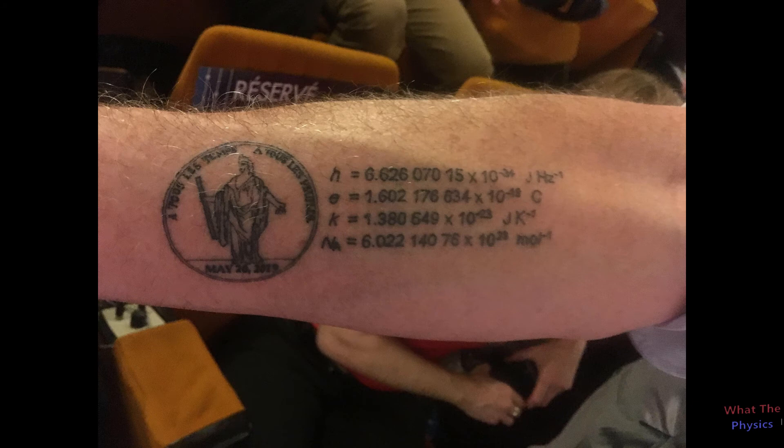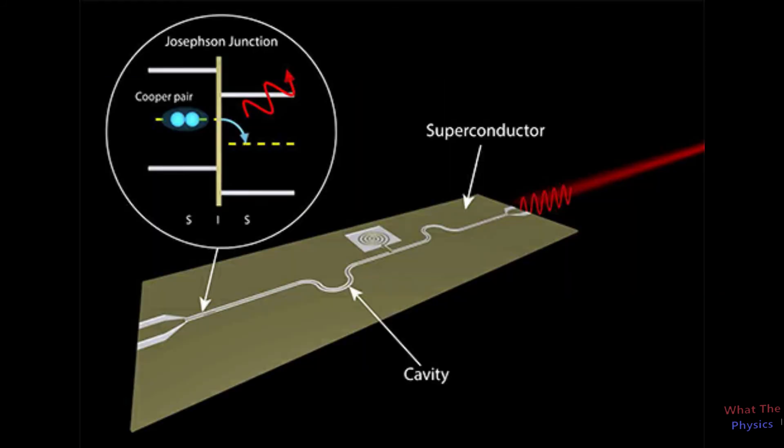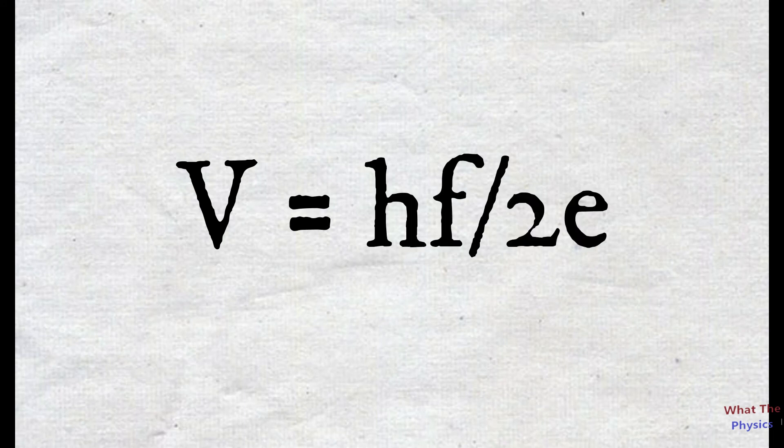It turns out that it will be done by a Josephson junction. In a Josephson junction, two superconductors are separated by a thin piece of insulator. And if we apply a microwave radiation to this junction, it creates a voltage across this junction, and its value is precisely equal to V = h × frequency / (2 × charge on the electron).